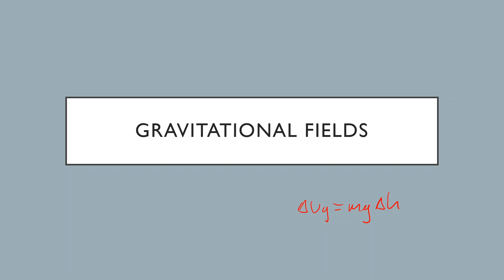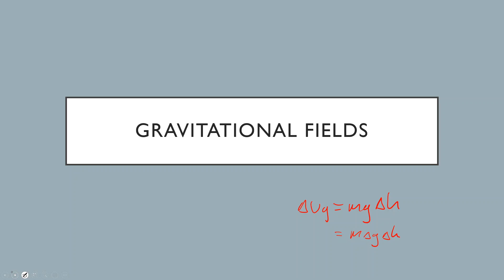We can't just put it into a formula — you can't use something like m·Δg·Δh, that just doesn't work. We need some other way to do it. So that's our dot point: analyze the use of gravitational fields to accelerate mass, including the change in gravitational potential energy from the area under a force-distance graph. That's how we're going to do it.